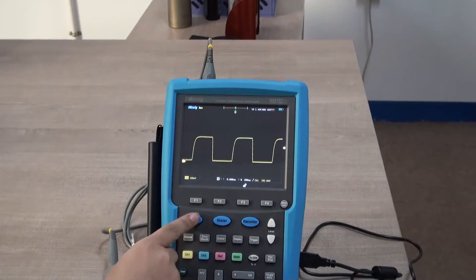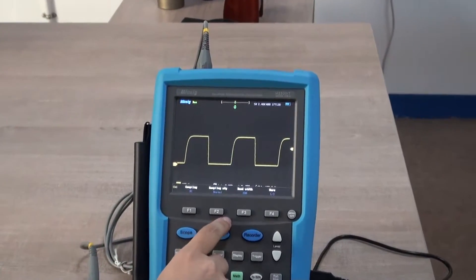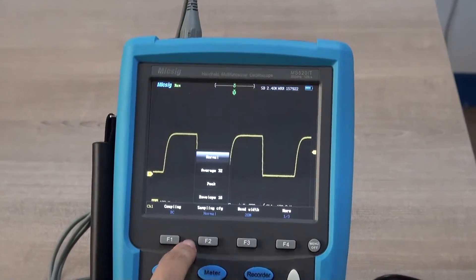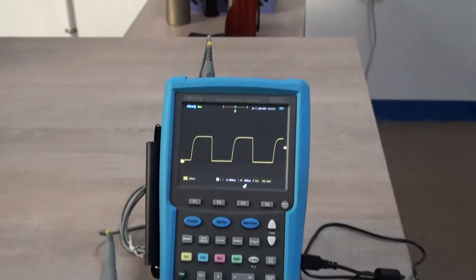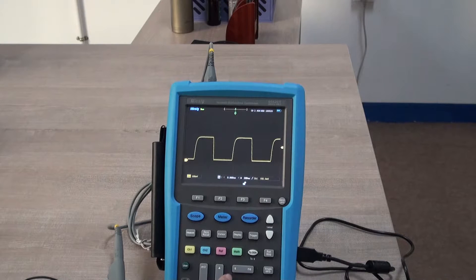First, press the scope button to set the sampling, trace the peak, then close the menu. Adjust the time base.